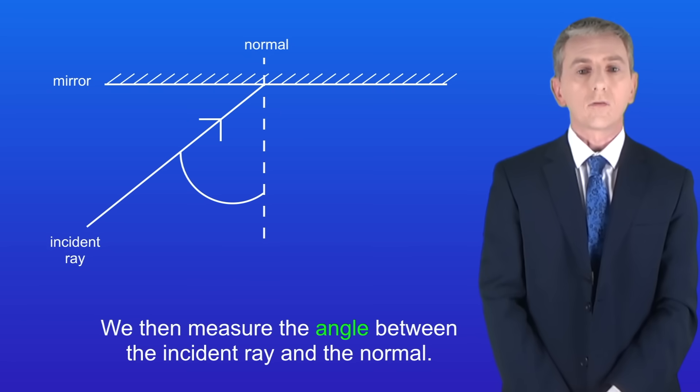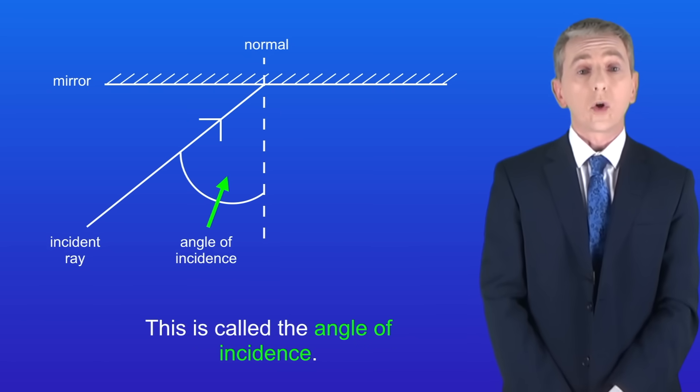We then measure the angle between the incident ray and the normal. And this is called the angle of incidence.